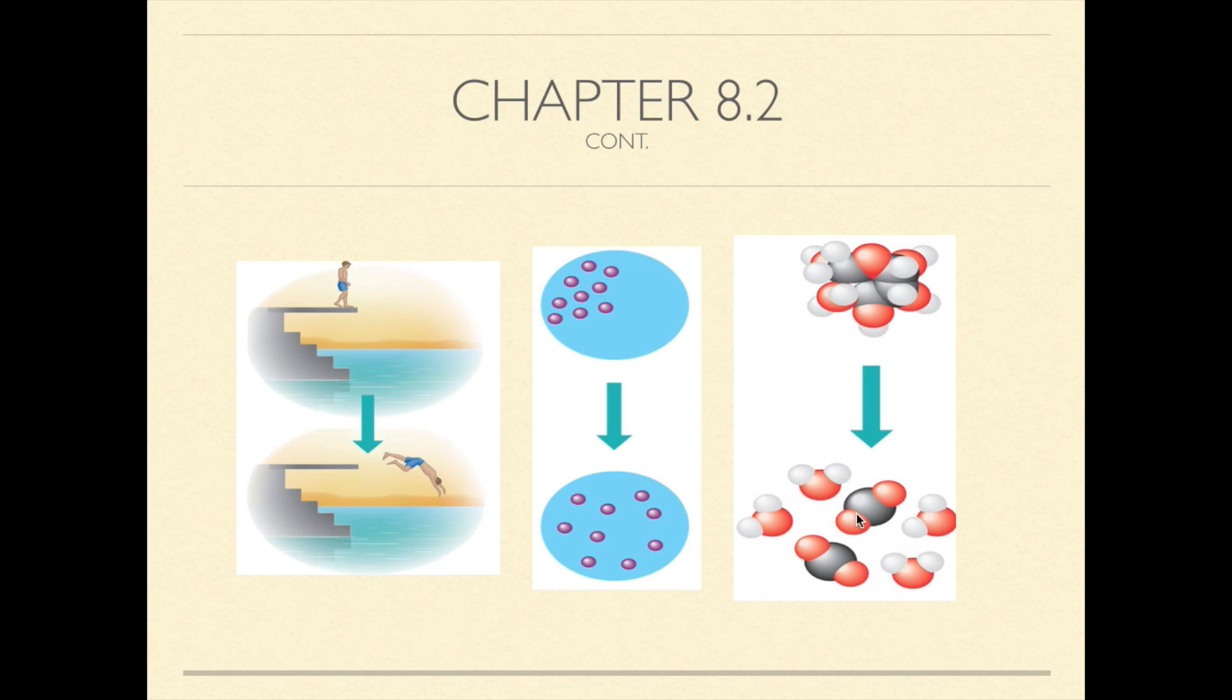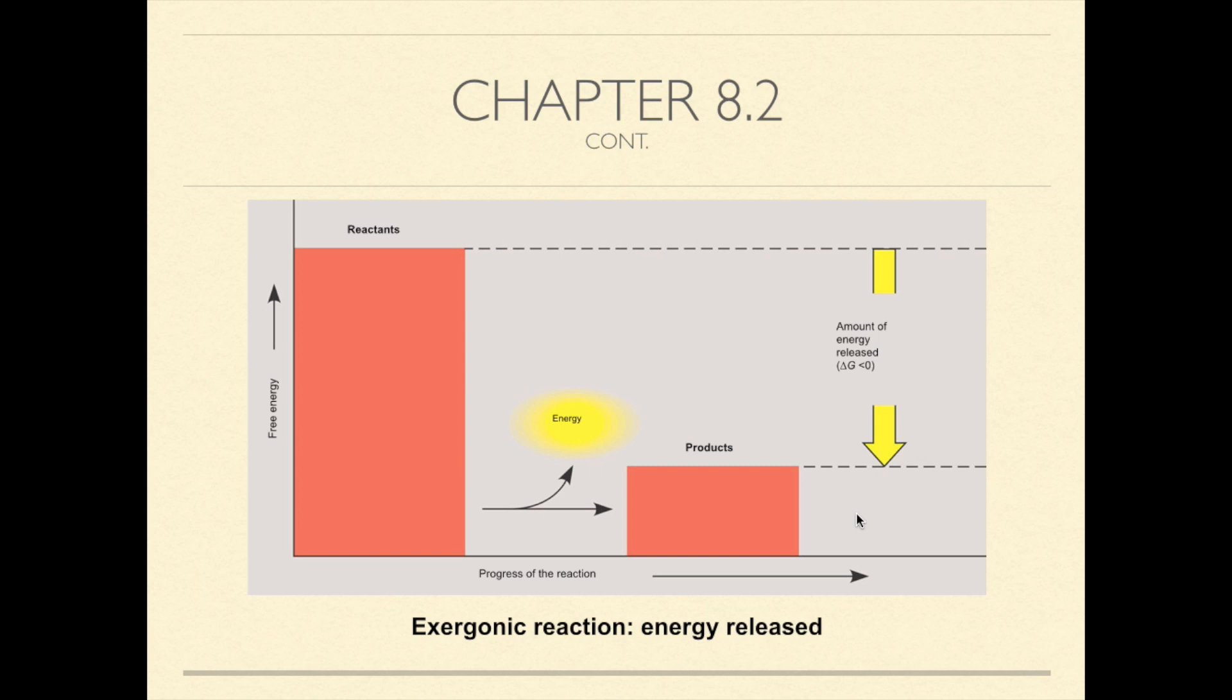Movements away from equilibrium require the addition of energy from an outside energy source or the surrounding. Chemical reactions can be classified as either exergonic or endergonic based on their free energy. An exergonic reaction proceeds with a net release of free energy. Free energy is negative for an exergonic reaction because the chemical mixture loses energy in order to make its final product.